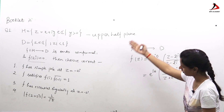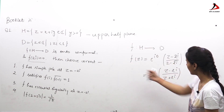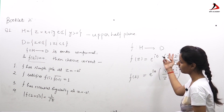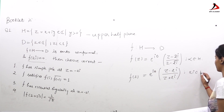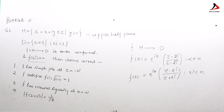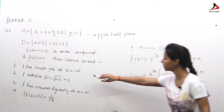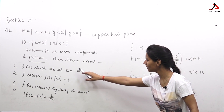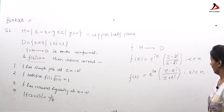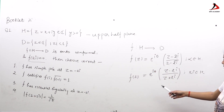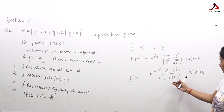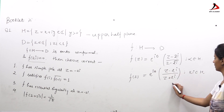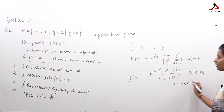We now have f : H → D, an onto Möbius transformation, with 2i belonging to the upper half plane. Now let's verify each option. Option 1 says f has a simple pole at z = −2i. Looking at the function, the singularity occurs at z = −2i.